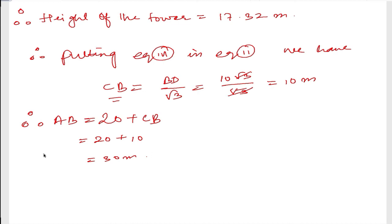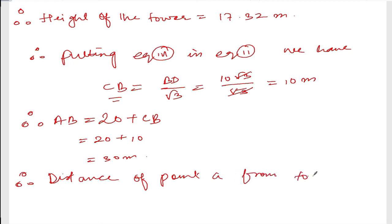Therefore, the distance of point A from the tower is 30 meters. That's all — it is a little bit complicated. If you didn't understand, please watch it again. If I've made any mistakes, please write in the comments below and I will check and improve it. Thank you so much, we will meet in the next video.